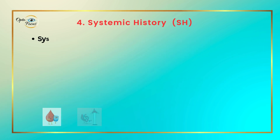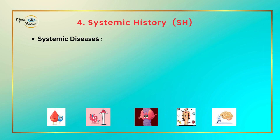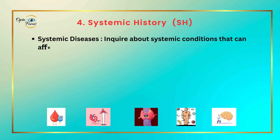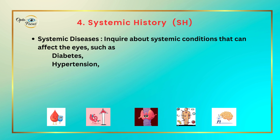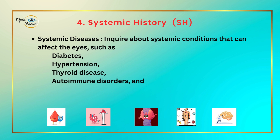Systemic history — systemic diseases. Enquire about systemic conditions that can affect the eyes, such as diabetes, hypertension, thyroid diseases, autoimmune disorders, and neurological conditions.